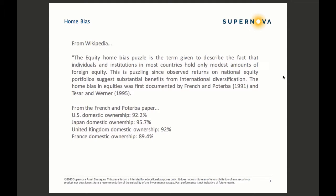The home bias in equities was first documented by French and Perturba in 1991. From that paper, U.S. domestic ownership was 92% — U.S. investors had 92% of their equities in U.S. stocks. In Japan, the number was 95.7%. In the U.K., 92%. In France, 89.4%. Things have gotten better since then, but not by much.